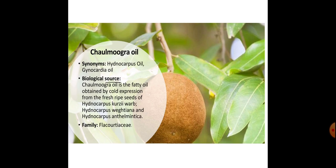Next drug is Chaulmoogra oil. Synonyms: Hydnocarpus oil, Gynocardia oil. Biological source: Chaulmoogra oil is the fatty oil obtained by cold expression from fresh ripe seeds of Hydnocarpus kurji, Hydnocarpus wightiana and Hydnocarpus anthelmintica. Family: Flacourtiaceae.